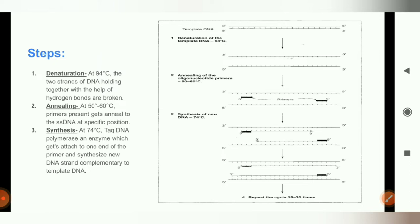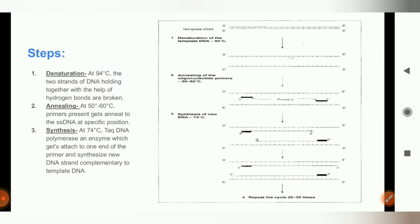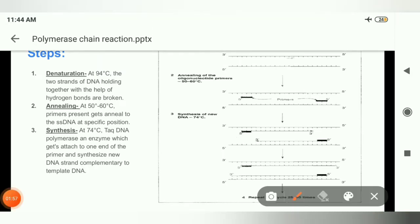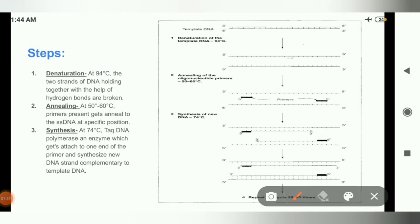In PCR, first is denaturation. A double-stranded template DNA is taken. At 94 degrees Celsius, the two strands which are held together by hydrogen bonds are broken down into single-stranded DNA.